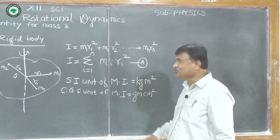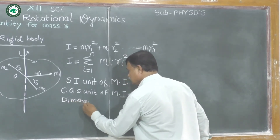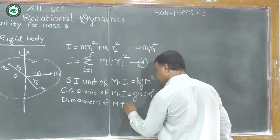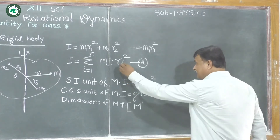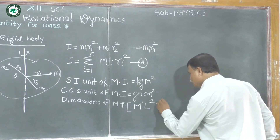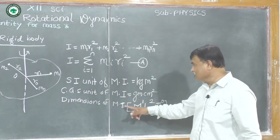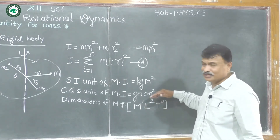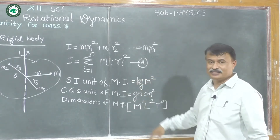We also write the dimensions of moment of inertia. Since mass is present, we have M raised to +1; length is present as square, so L raised to +2; and T is absent, so T raised to 0. Therefore, the dimensions of moment of inertia are M¹L²T⁰.